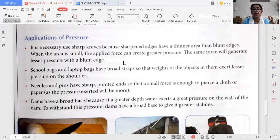Needles and pins - we all know their tips are always pointed and very sharp, so that a small force is enough to pierce a cloth or paper. Because they have a very sharp and pointed end, they have a very small area of contact. That's why they can easily pierce any cloth or paper, as the pressure exerted will be more.